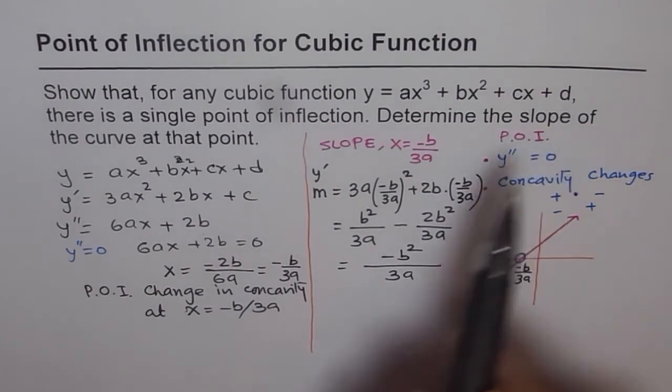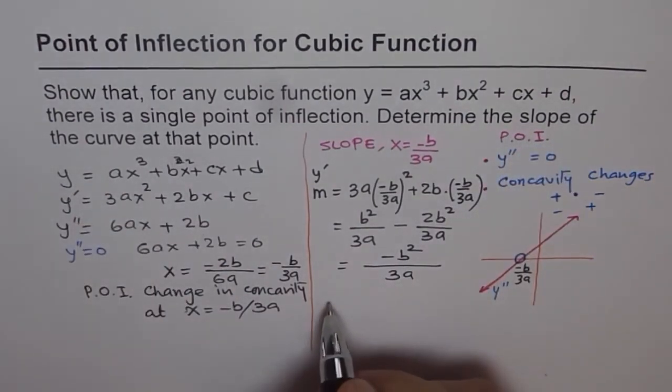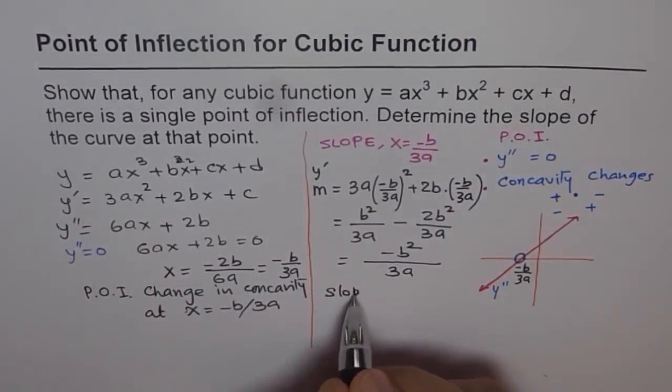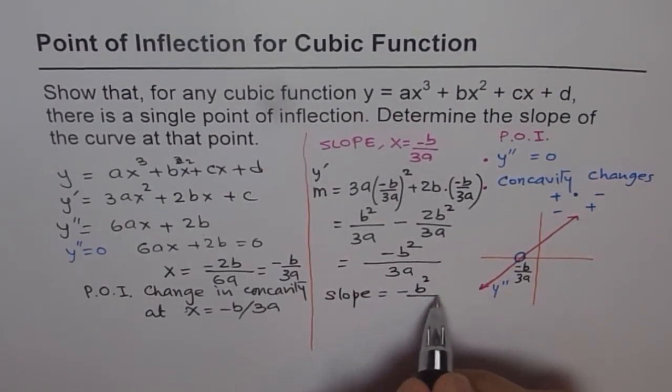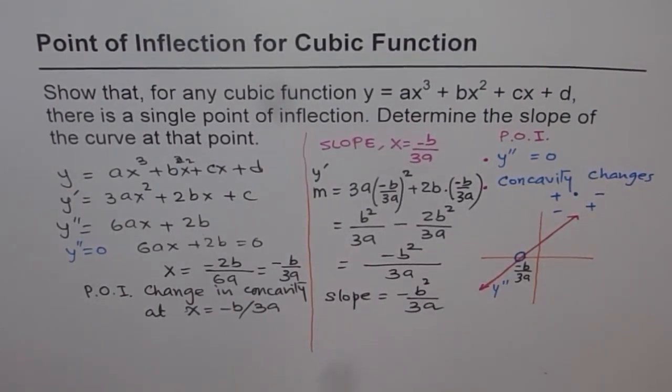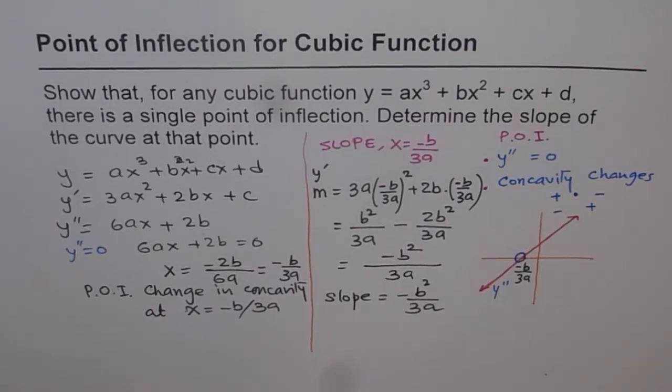Determine the slope of the curve at that point. So we know slope at this point will be always equal to minus b² over 3a. That is interesting. I hope you find this problem extremely useful and interesting. Thank you.